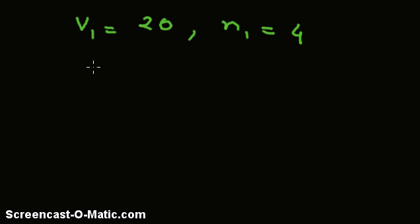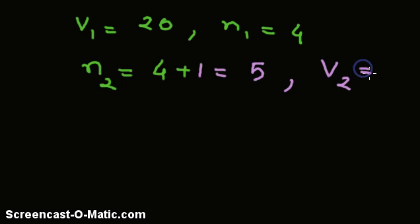The final number of moles, N2, is 4 plus the extra added one, which equals 5. And we have to find the final volume.